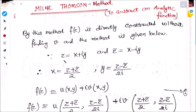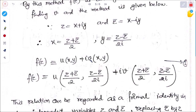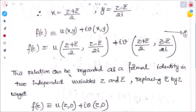Since z = x + iy and z̄ = x - iy, adding and subtracting gives x = (z + z̄)/2 and y = (z - z̄)/2i. Now f(z) = u(x,y) + iv(x,y). Replacing x with (z + z̄)/2 and y with (z - z̄)/2i, we get a formal identity in two independent variables z and z̄.